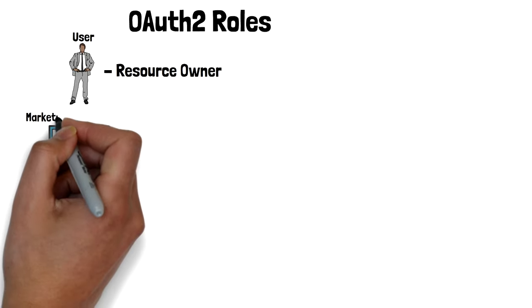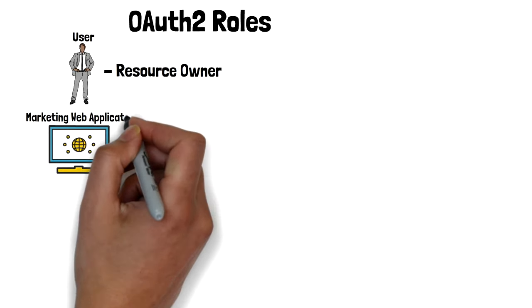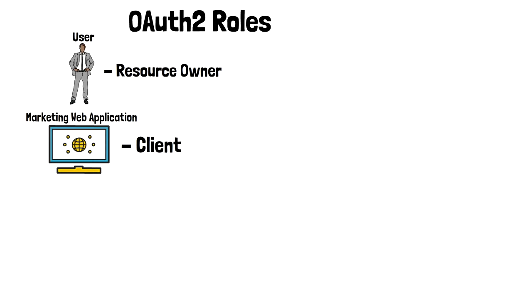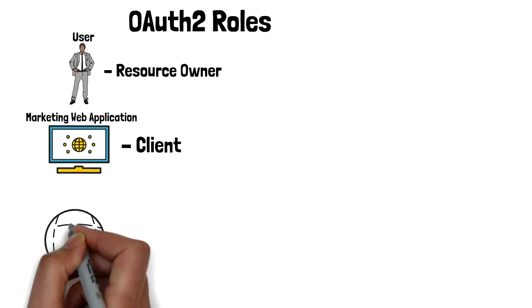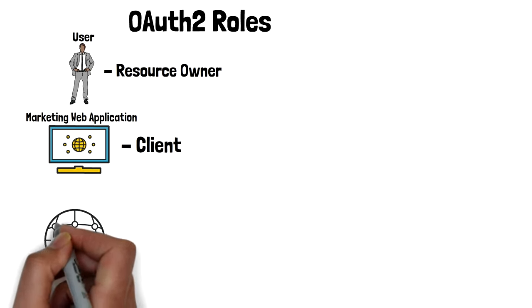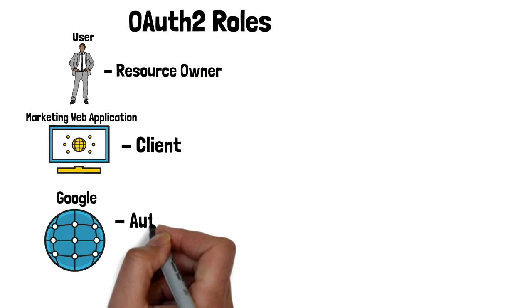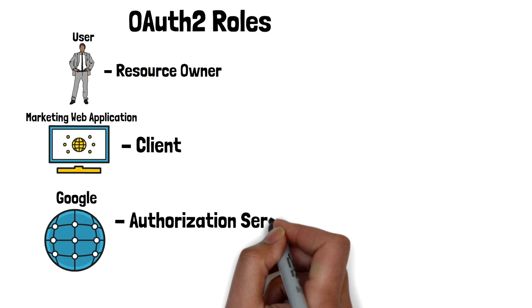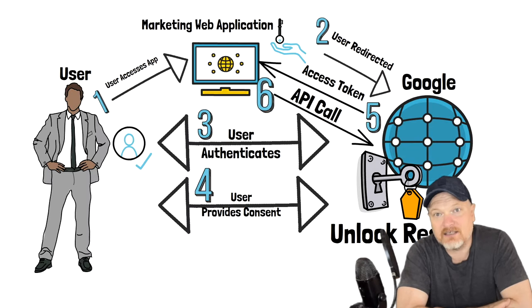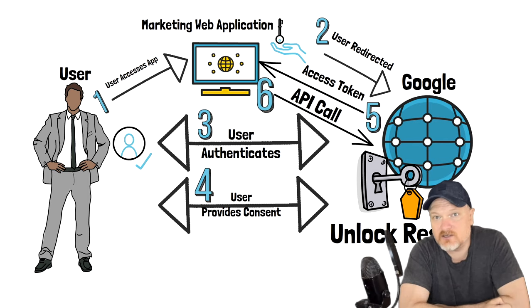The second role is the client — in our example, the marketing web application that wishes to gain read-only access to the user's Google contacts. The third role is the authorization server — provided by Google, which receives a request from the client. Before granting authorization, the user is presented with a consent page. If the user gives consent, an access token is issued to the client.